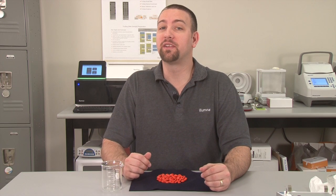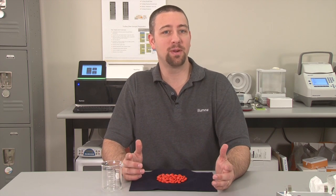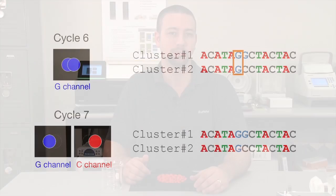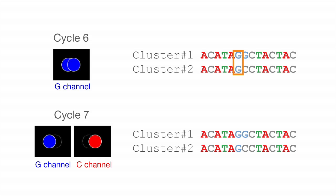When the sequencing instrument mistakes multiple clusters for one big cluster, ambiguous base calls can result and lead to that cluster failing quality filtering. For example, suppose clusters one and two of our low diversity library were close together on the flow cell. Since they have the same sequence for the first six cycles, the two clusters may be mistaken for one larger cluster. When the two clusters differ in cycle seven, the instrument interprets the signal as noisy signal from a single larger cluster, and this cycle will not pass quality filtering.